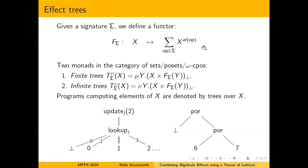For each operation we encounter we have all these continuations, and given this functor we can take the limits and colimits over it to generate two monads on the category of sets, posets, and omega-CPOs: the finite trees and the infinite trees. The finite trees have internal nodes as operations and leaves as possible return values from set X. The infinite trees are the same but can be infinitely deep.